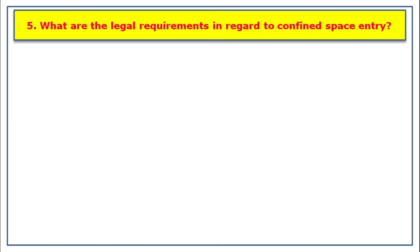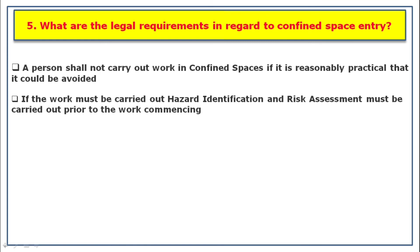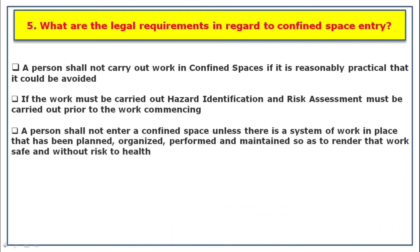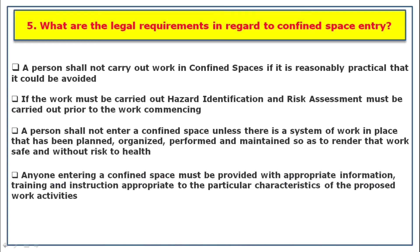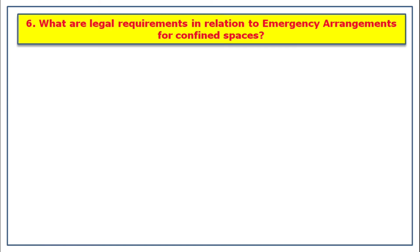What are the legal requirements in regards to confined space entry? The Safety, Health and Welfare at Work Regulations 2001 cover all work in relation to confined spaces. Regulation 5 states that a person shall not carry out work in a confined space if it is reasonably practicable that it could be avoided. If the work must be carried out, a hazard identification and risk assessment must be completed prior to the work commencing. A person shall not enter a confined space unless there is a system of work in place that has been planned, organized, performed, and maintained so as to render that work safe and without risk to health. Anyone entering a confined space must be provided with appropriate information, training, and instruction.